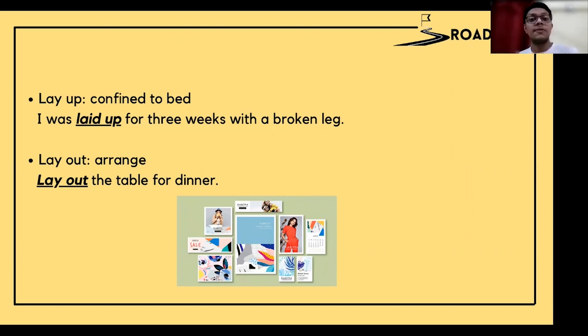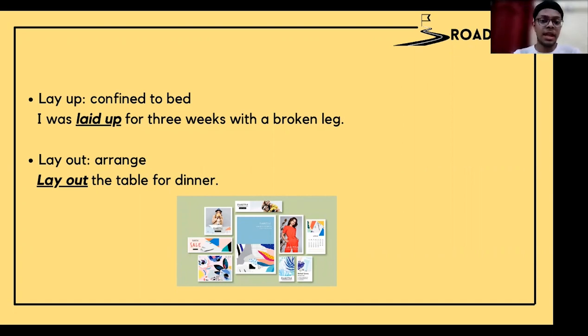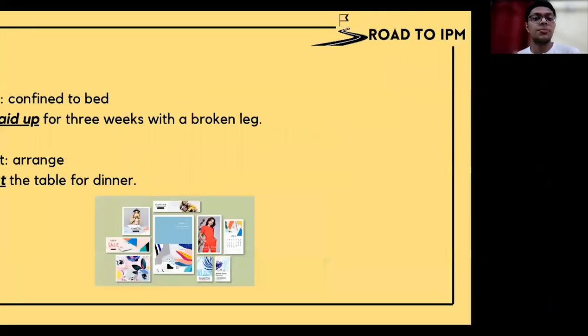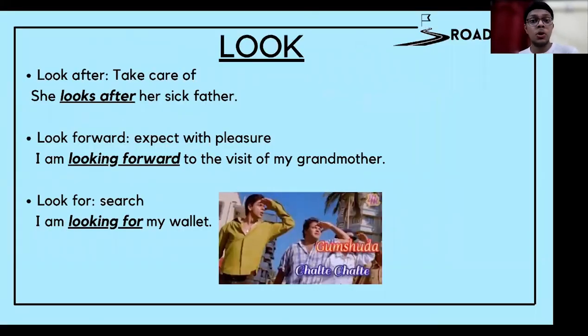'Lay out' means to arrange something. For example: lay out the table for dinner — arrange the table so that we can have dinner. Then the verb is 'look,' and the first phrasal verb is 'look after.'